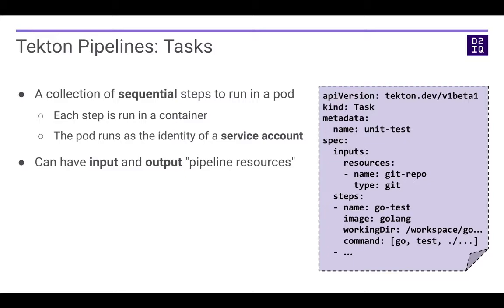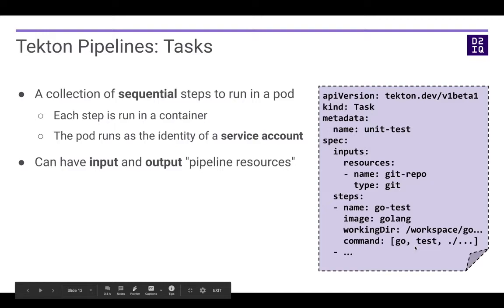A task is a collection of sequential steps to run in a pod. Each step is run in a container, and the pod runs as the identity of a service account. When you use Dispatch, you need to create a service account and give secrets to it. So when Tekton runs, it uses that service account to run the pods, which gather secrets. Each task can have input and output pipeline resources. Here is an example: we have a task named unit-test, which declares it has an input resource called git-repo, and the steps are the containers to run — in this example, it runs a Go test using the Go image.